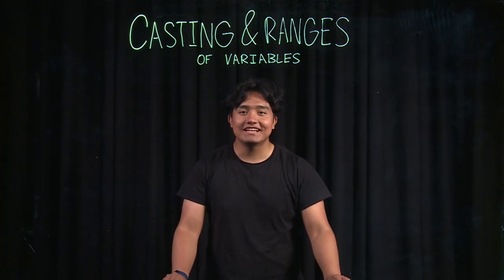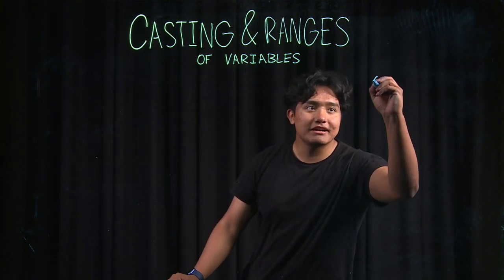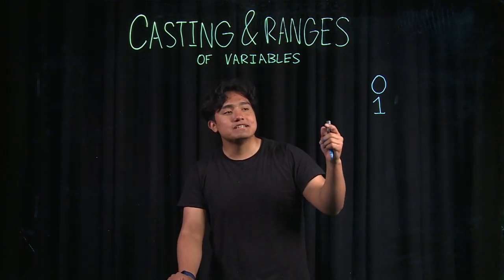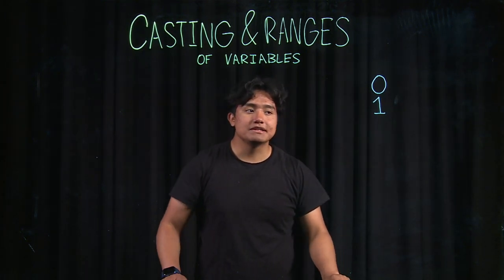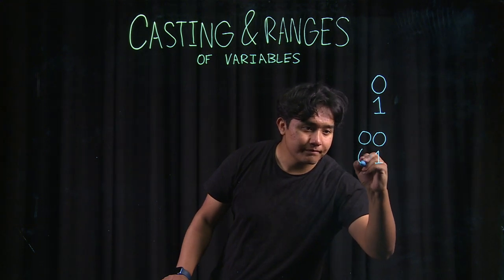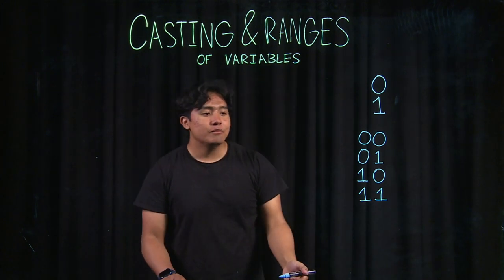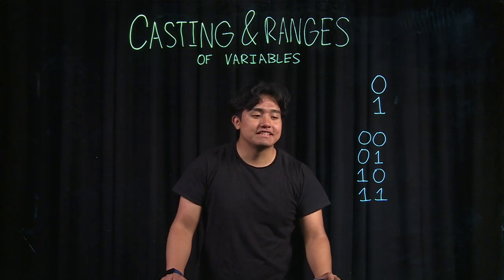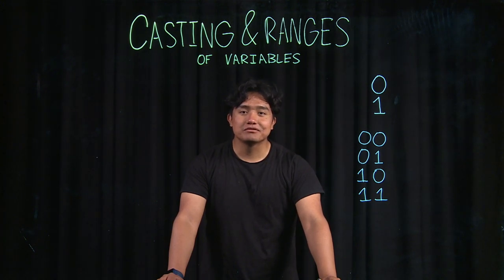Computers use bits to store data, and these bits are what give our data types different ranges of values. Let's talk about how that works. With one bit, since bits are binary and can only be represented by zeros and ones, we can store two different values. With two bits, we can represent four values. It increases by a power of two each time — exponentially — so adding more bits lets us represent a larger range of values.